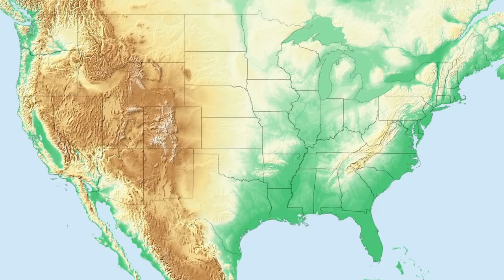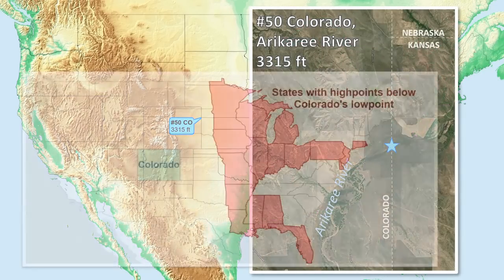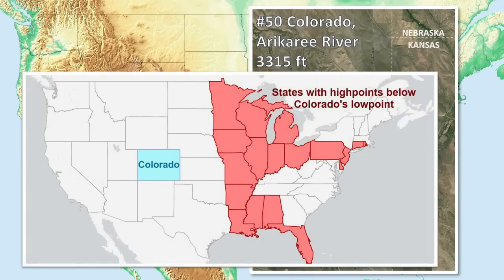Going from highest to lowest, we start with number 50: Colorado, the Arakari River. This is so high that the highest point of 18 other states is below this state's low point.